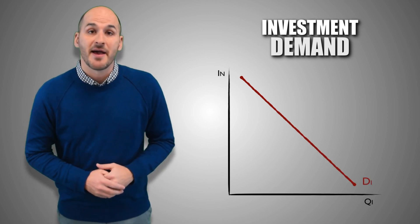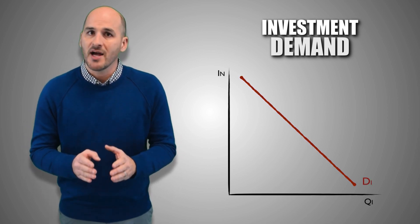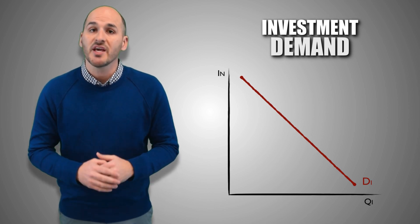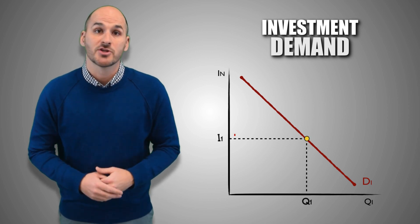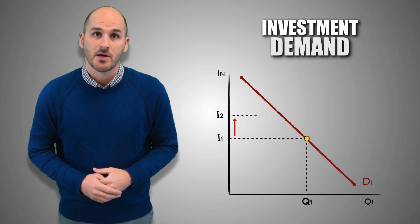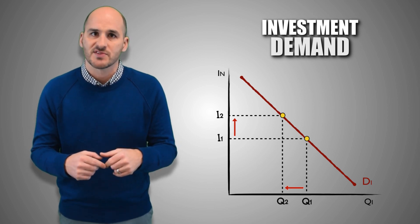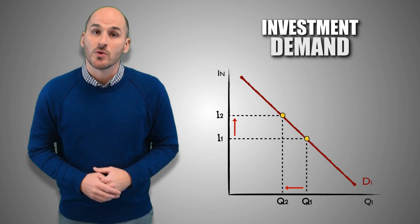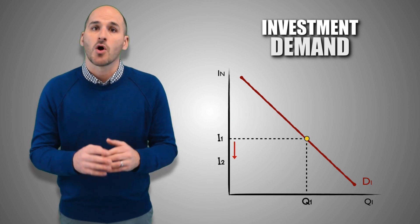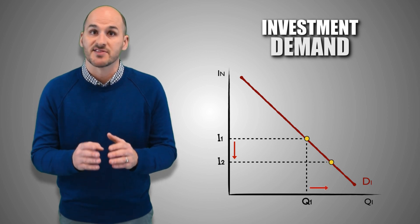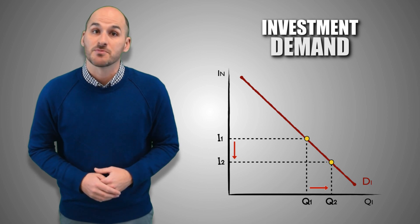This is the investment demand curve. Notice that it's a downward sloping curve, implying that the relationship between nominal interest rates and the quantity of investment demanded is inverse. This means that as nominal interest rates rise in the aggregate economy, firms are less willing or less able to take out the same quantity of loans and reinvest in themselves, and therefore take out fewer loans and invest less. As nominal interest rates fall in the aggregate economy, firms are more willing or more able to take out the same quantity of loans and reinvest in themselves, and therefore take out more loans and invest more.